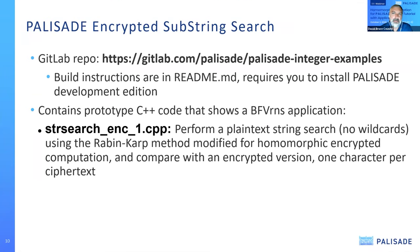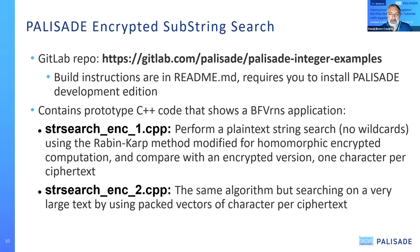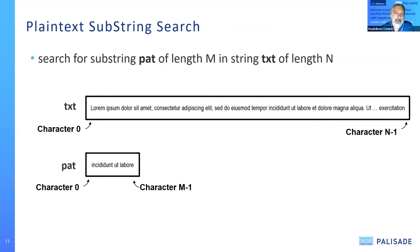There are two versions. The first performs a plain text string search with no wildcard using the Rabin-Karp method modified for homomorphic encrypted computation, then compares a plain text and an encrypted version — storing one character per ciphertext, which is the typical first-step approach. The second version uses the same algorithm but with packed vectors of characters in ciphertext, enabling search of much larger texts. We're searching for a substring called 'pat' of length m in a string called 'txt' of length n.